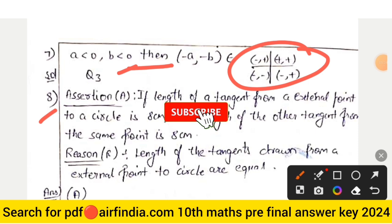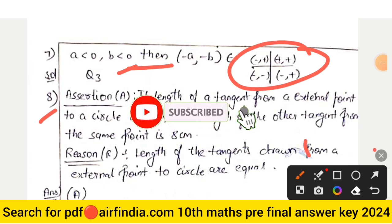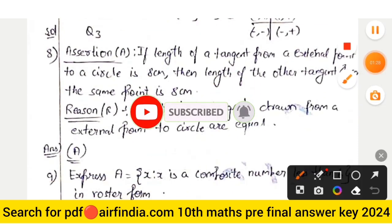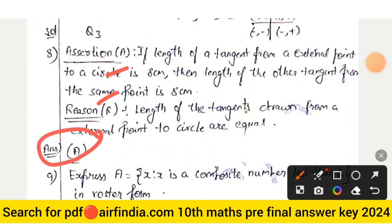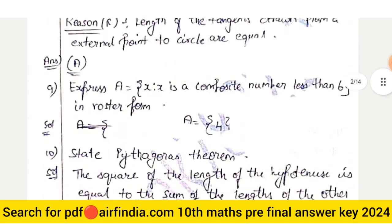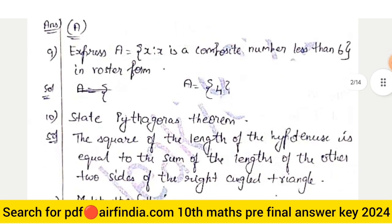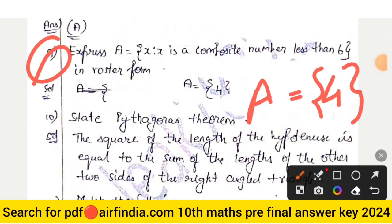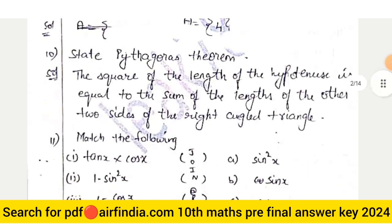Question number eight — assertion: both A and R — the answer is option number A. Question number nine: a is equal to 4, this is your answer for question nine.